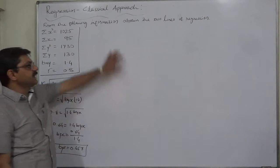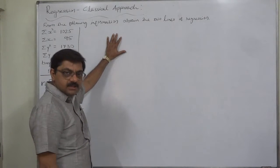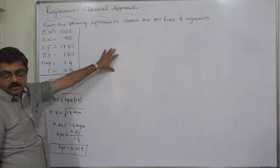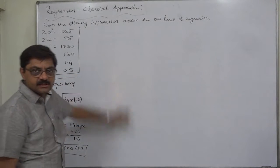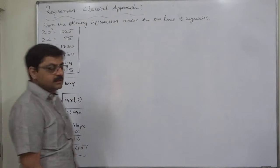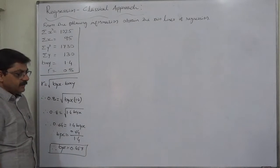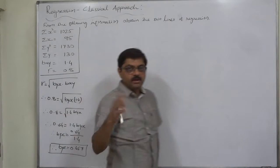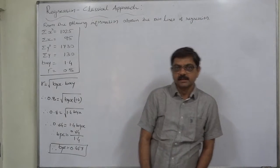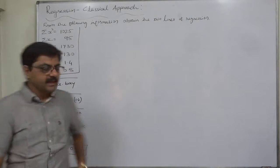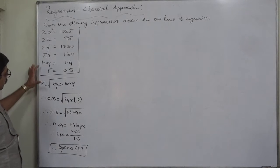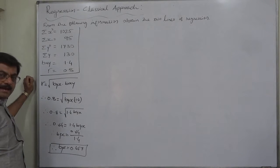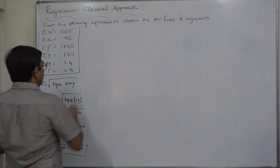This is the main point of this case — I selected it specifically because it covers finding n, which is a very rare situation. The easiest way to find n is to take the ratio of the two regression coefficients byx and bxy.